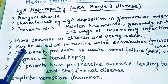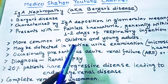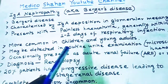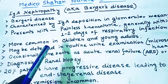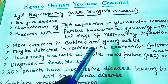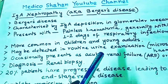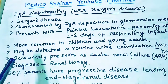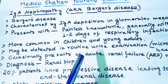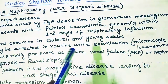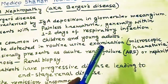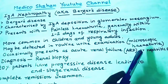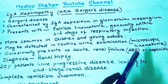IgA nephropathy is more common in children and young adults. It may be detected on routine urine examination and can present as microscopic hematuria.